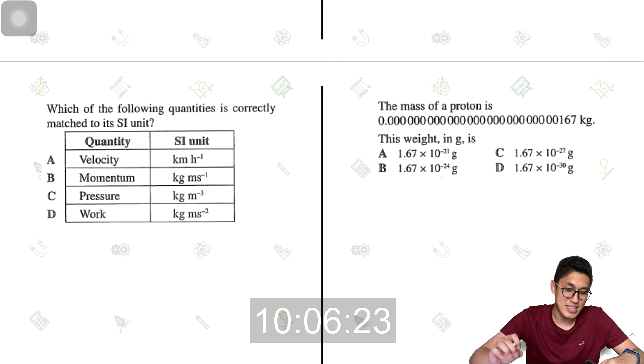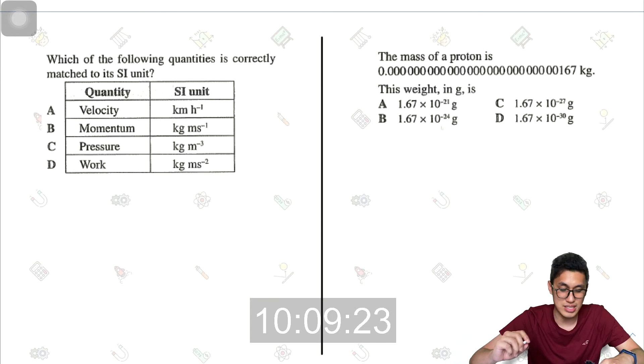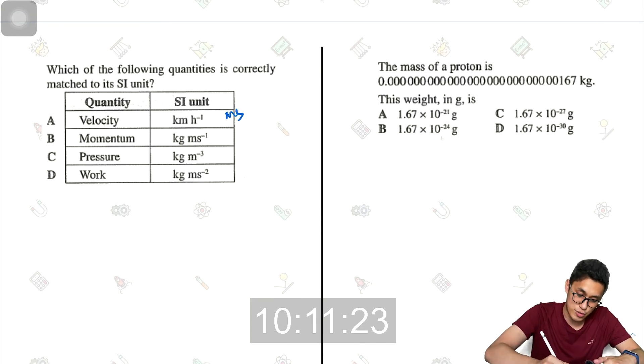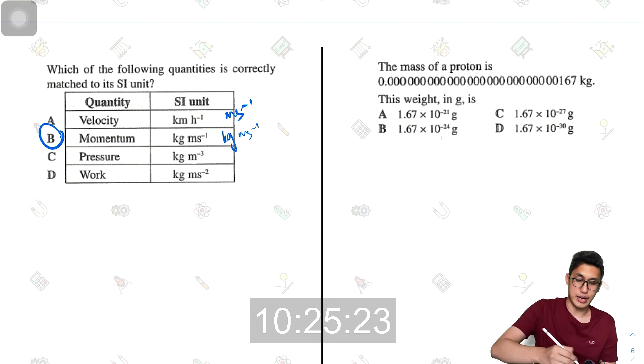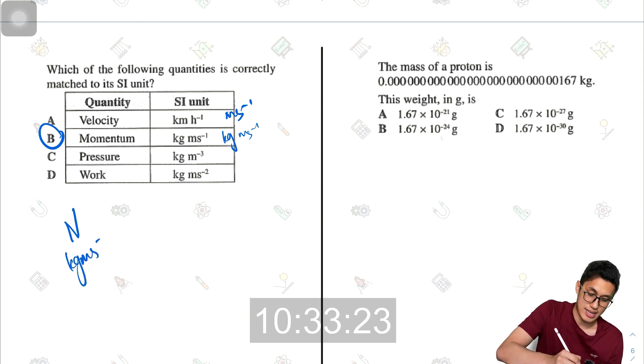The next one. Which of the following quantities is correctly matched to its SI units? Velocity should be meters per second. Momentum, that's mass times velocity. So kg times meters per second. So that's correct. Pressure is force over area. Force is newtons or, because we know force is mass times acceleration, kg meters per second squared.